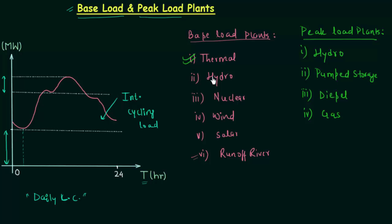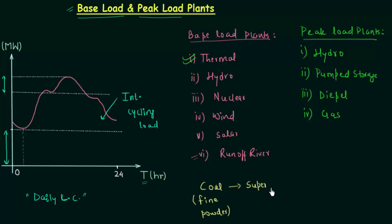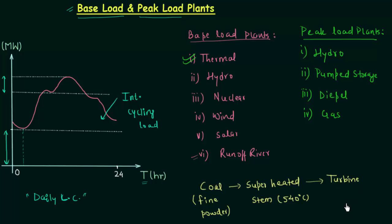Let's talk about thermal power plants. In thermal power plants we use coal to produce electricity. First we crush the coal into fine powder, then feed it to boilers to produce superheated steam. The temperature of superheated steam is 540 degrees Celsius. This superheated steam is then fed to the turbine, which rotates and produces electricity because it is connected to a generator using the prime mover.